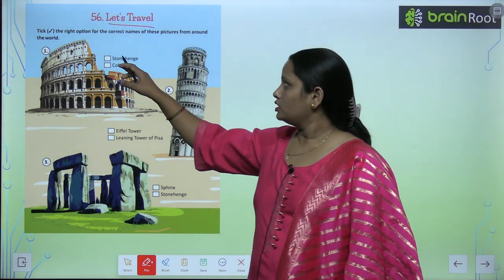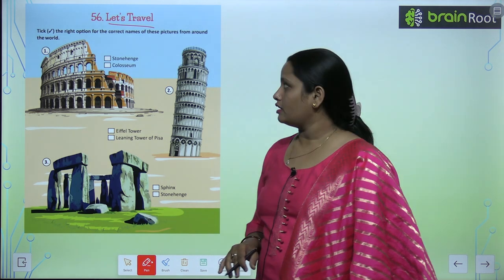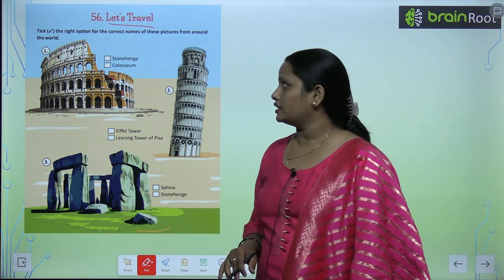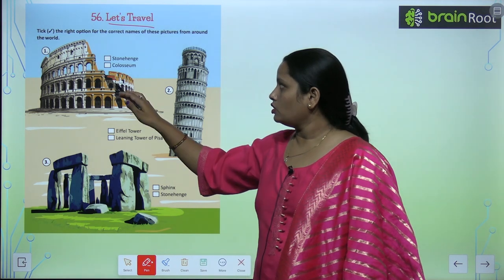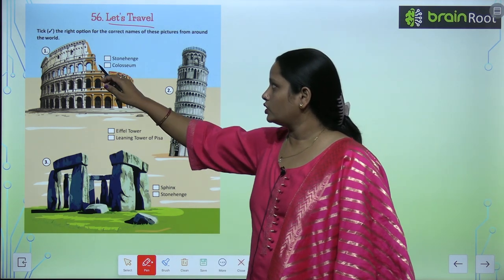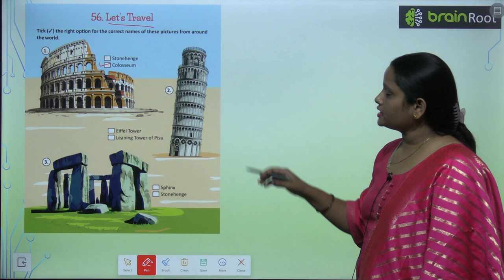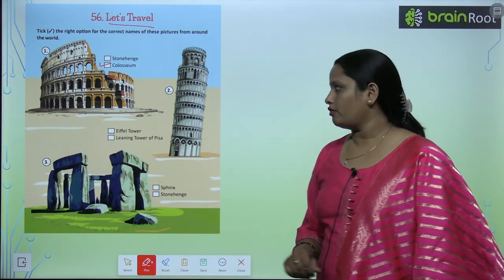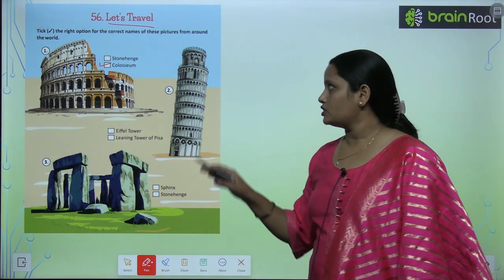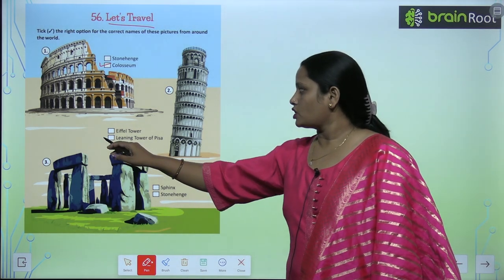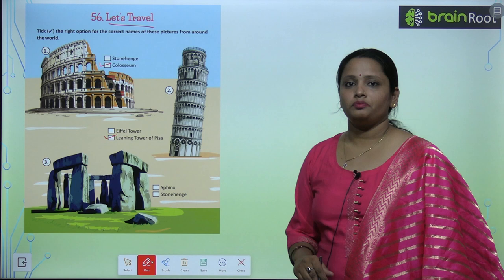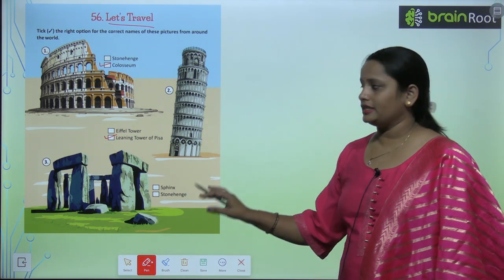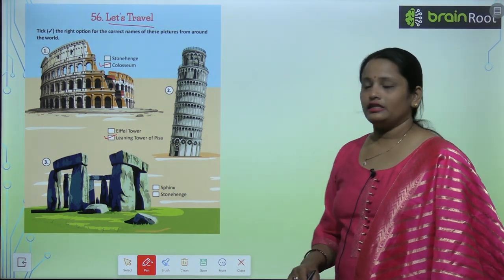So you can see here two names: first is Stonehenge and second is Colosseum. So this picture is of Colosseum. Next, the second picture you can see the two names are given: Eiffel Tower and the Leaning Tower of Pisa. So this picture is of Leaning Tower of Pisa. Similarly, find the name of the next buildings that are given here.